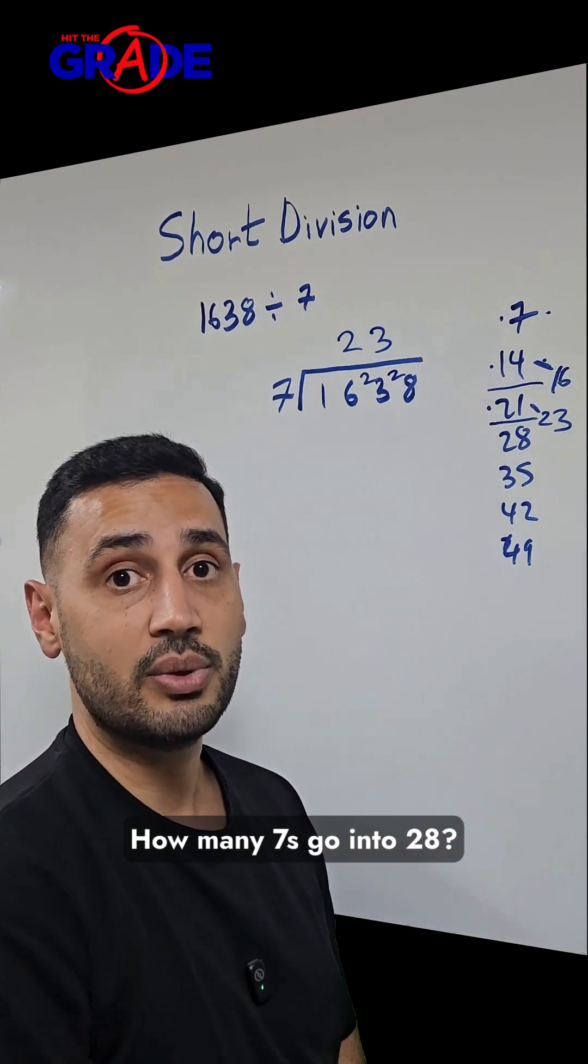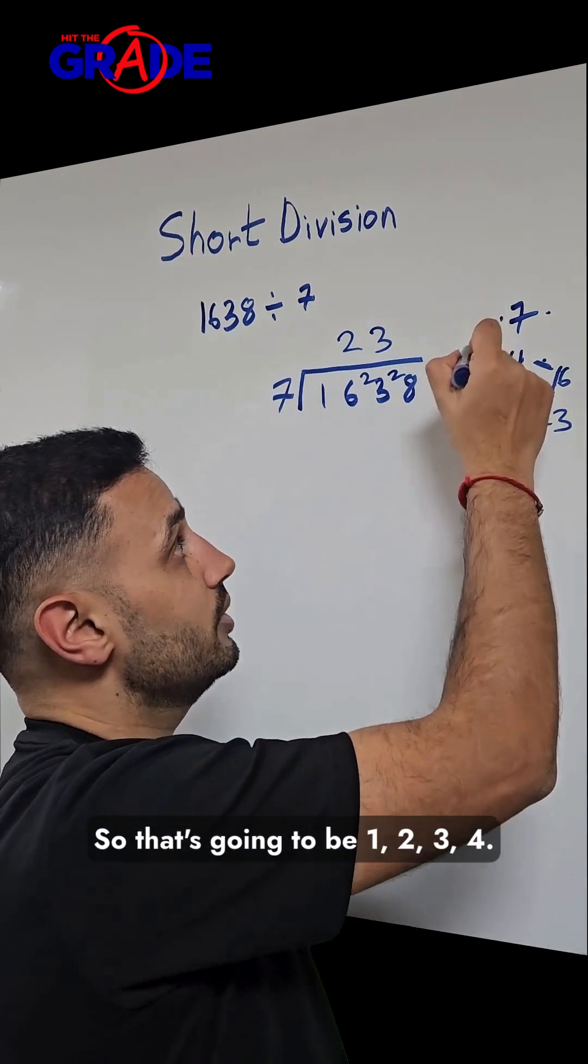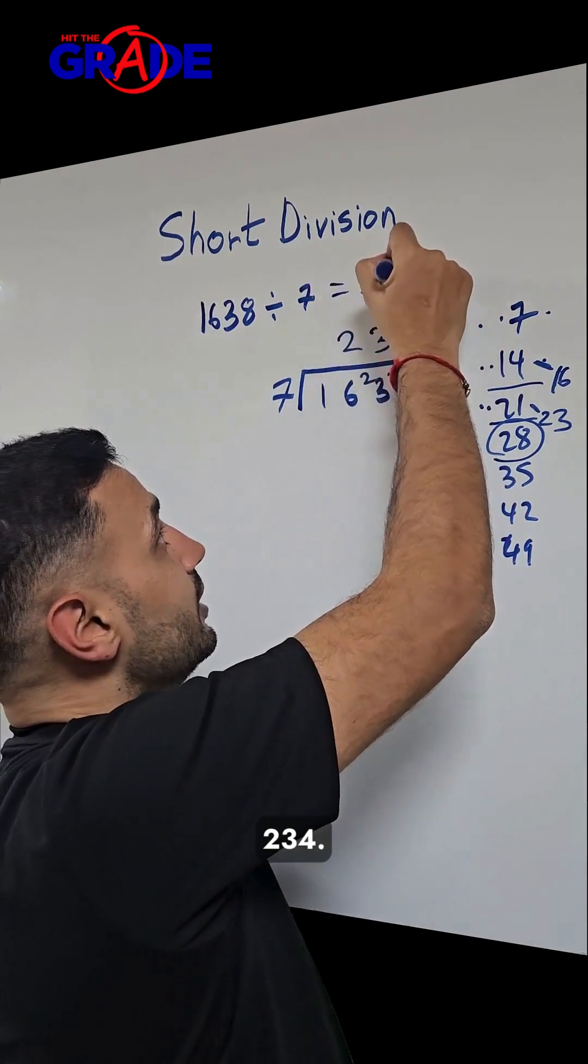How many 7s go into 28? Well, 28, bingo, is in the 7 times table. So that's going to be 1, 2, 3, 4. And so our answer is 234.